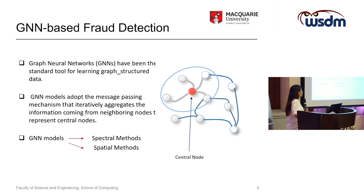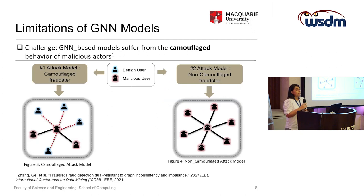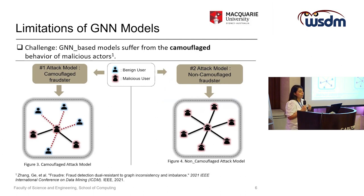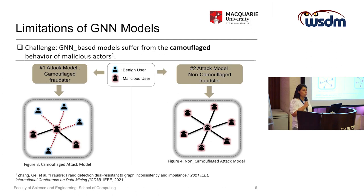GNN models can be categorized into two domains: spectral and spatial. Although existing GNN models have achieved great success in the literature, they also suffer from the camouflage behavior of malicious actors. To understand this, I will introduce two types of attack models. The first attack model is induced by camouflage fraudsters, who try to connect to many normal connections in the network in order to hide themselves from being detected.